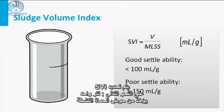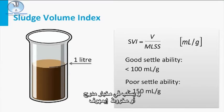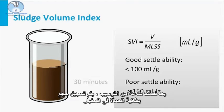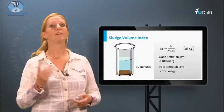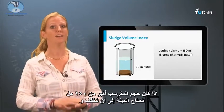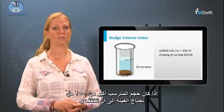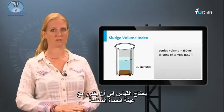The SVI is determined as follows. One liter of mixed liquor is taken from the activated sludge tank and poured into a measuring cylinder, or Imhof cone. After half an hour of settling, the volume of the sludge blanket in the cylinder is registered. If this settled volume is larger than 250 milliliters, the sample needs to be diluted, and the measurement needs to be repeated with the diluted sludge sample.